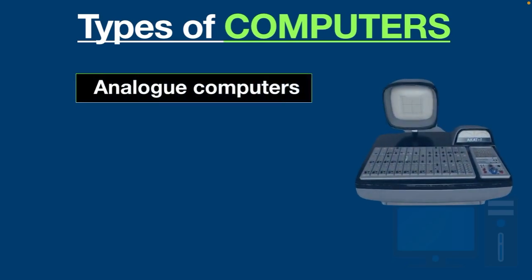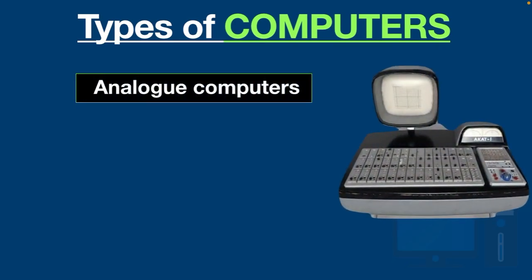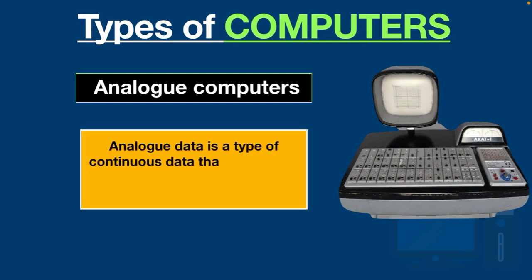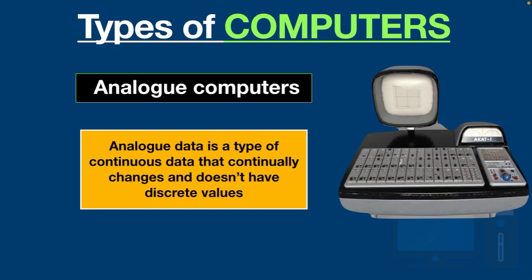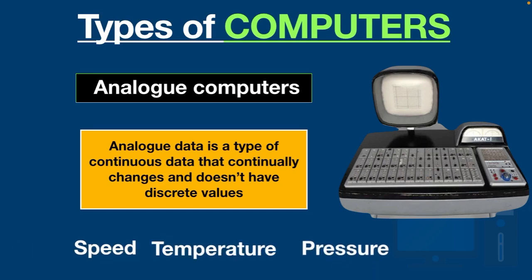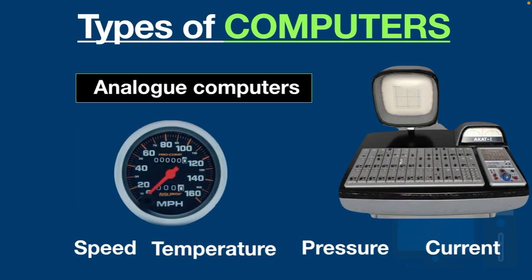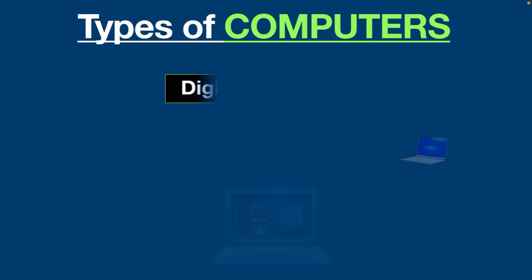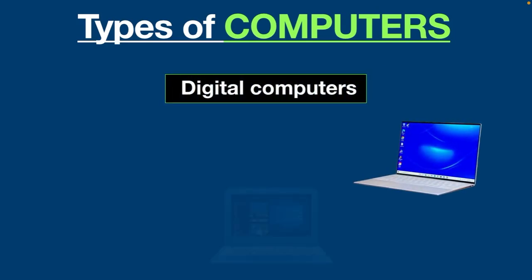Analog computers are specifically designed to process analog data. Analog data is a type of continuous data that continually changes and doesn't have discrete values. Analog computers are used where we don't need exact values, such as speed, temperature, pressure, and current. Examples of analog computers are the speedometer and mercury thermometer.